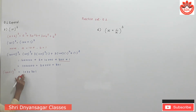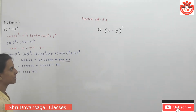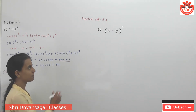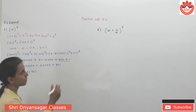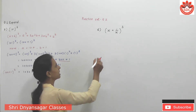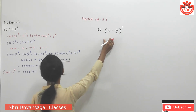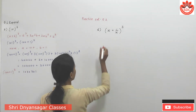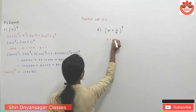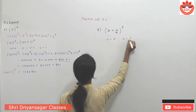We get 1,030,301, which is the expansion of (100 + 1)³. After that, we see example 6: (x + 1/x)³. This example is expanded using the same formula. Here, a = x and b = 1/x.